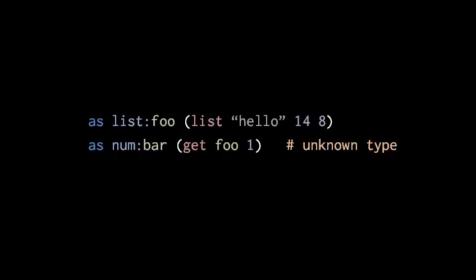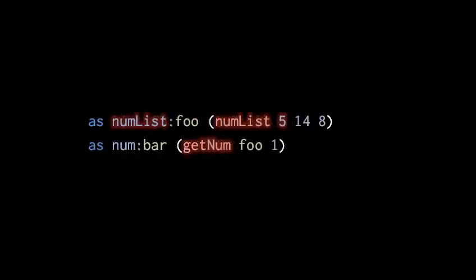The underlying problem is that for static typing to work, variables must have a fixed type — you can only assign values of a particular type to that variable. Lists and dictionaries are very much like variables in that they consist of slots where you can assign values. If we want those slots to be fixed in type, we can't have lists and dictionaries that consist of any type of object. Instead, we have to have homogeneous lists and dictionaries made up of only one type. For example, instead of a generic list, we'd have a num list which can only consist of numbers, and the getNum operation is known to return a number — satisfying the static typing system.